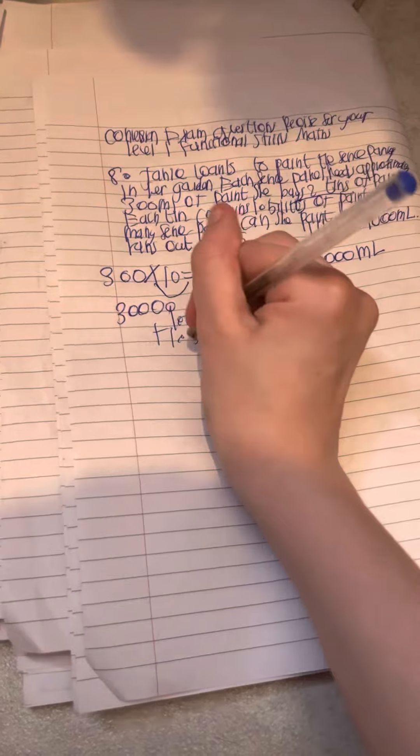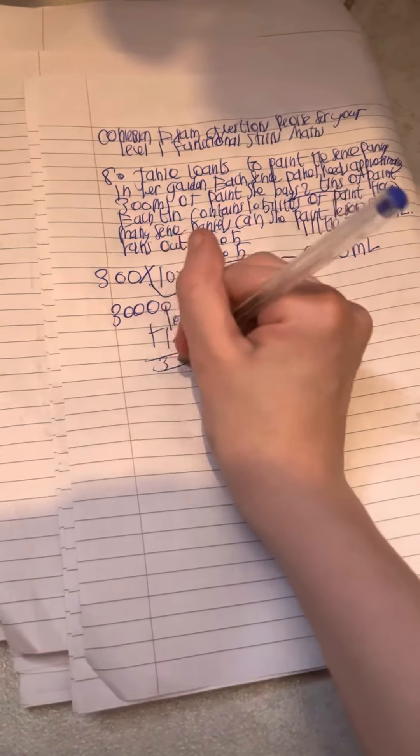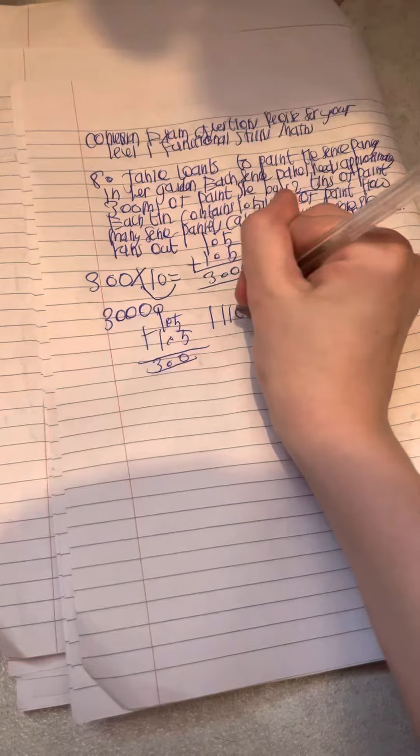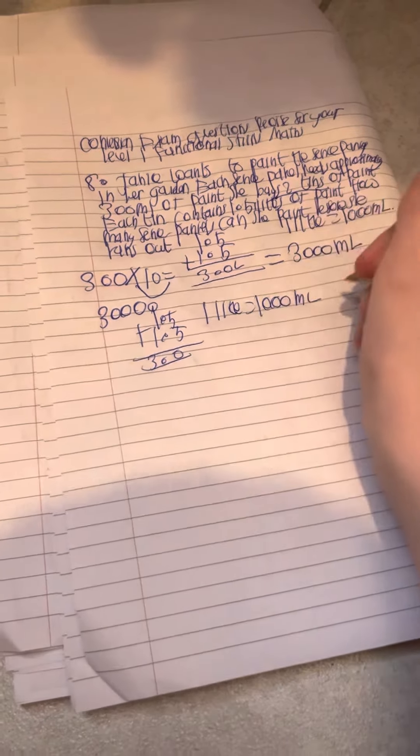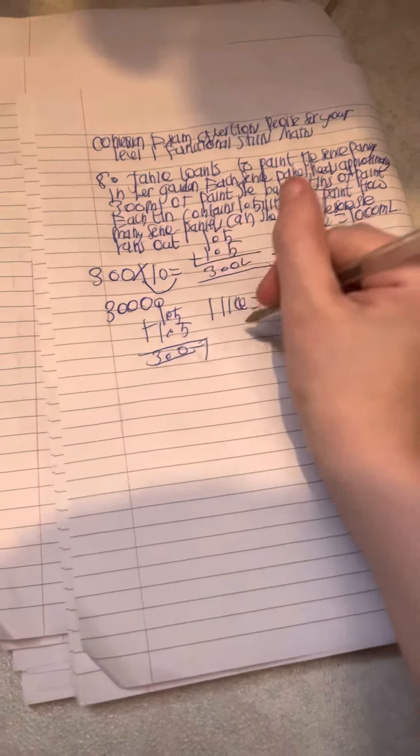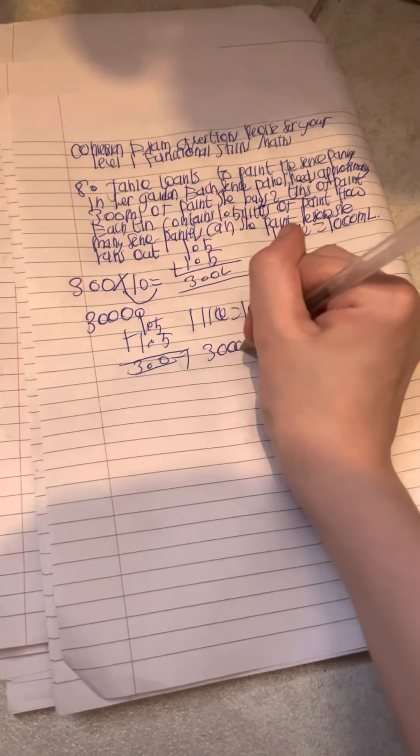So the first thing we need to do is 1.5 plus 1.5 and that will give us 3.0. So in 1 litre there is 1000ml. So in 3 litres that's going to be 3000ml.